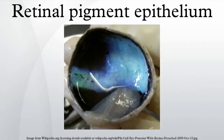Anatomy. The RPE is composed of a single layer of hexagonal cells that are densely packed with pigment granules. At the ora serrata, the RPE continues as a membrane passing over the ciliary body and continuing as the back surface of the iris.